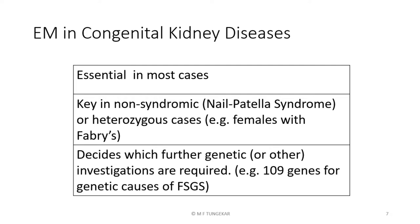The role of electron microscopy in congenital kidney diseases: as noted before, it is considered essential in most cases. It is a key investigation in non-syndromic cases. For example, take nail patella syndrome — a classic syndrome consisting of abnormal dystrophic nails, abnormal or absent patella bone, and ileal bone abnormalities. But some cases may not have these somatic manifestations; the only finding would be an abnormal glomerular basement membrane with collagen fibers. These are non-syndromic cases in which EM may provide the first indication of existence of the syndrome.